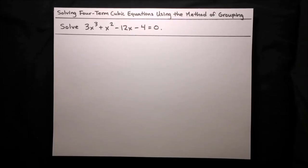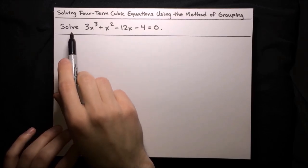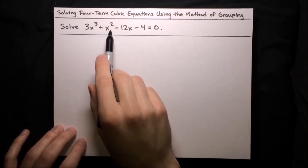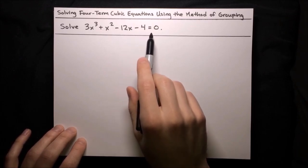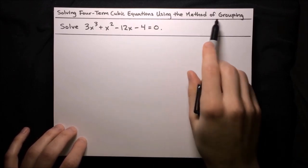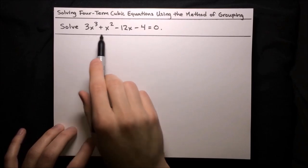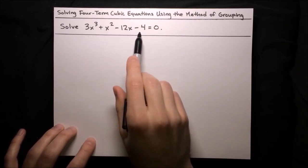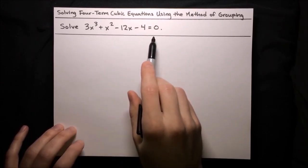In this video, I'm going to show you how to solve four-term cubic equations using the method of grouping. Here we've got a cubic equation, and we want to solve 3x cubed plus x squared minus 12x minus 4 equals 0. We can use the method of grouping to factor this cubic, and then use the zero product rule to set each factor equal to 0.